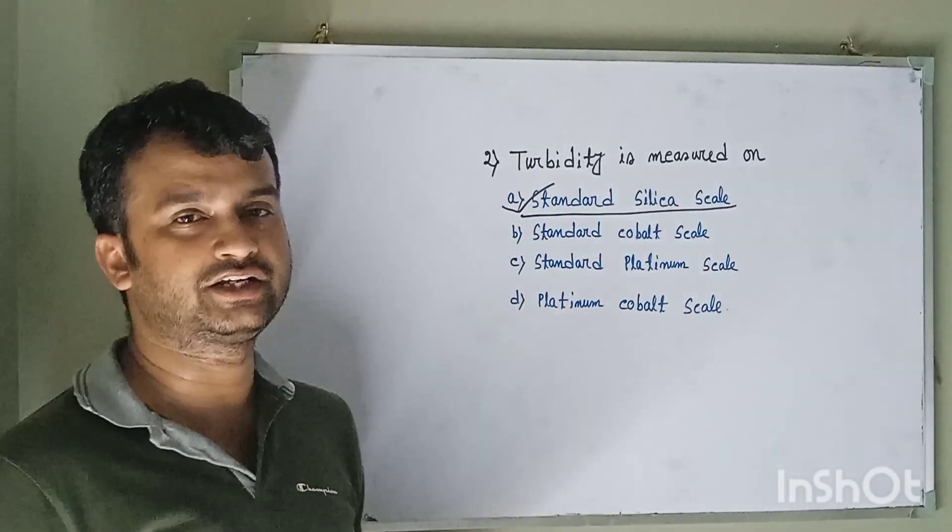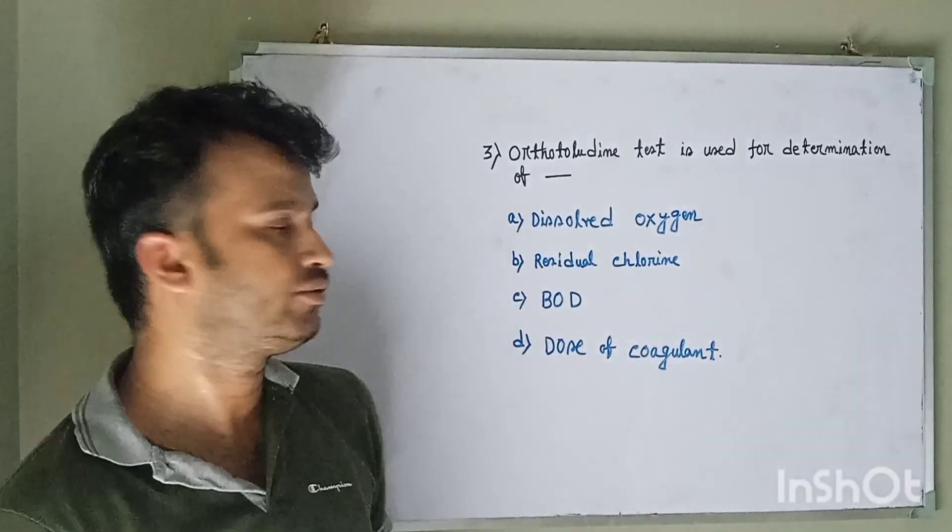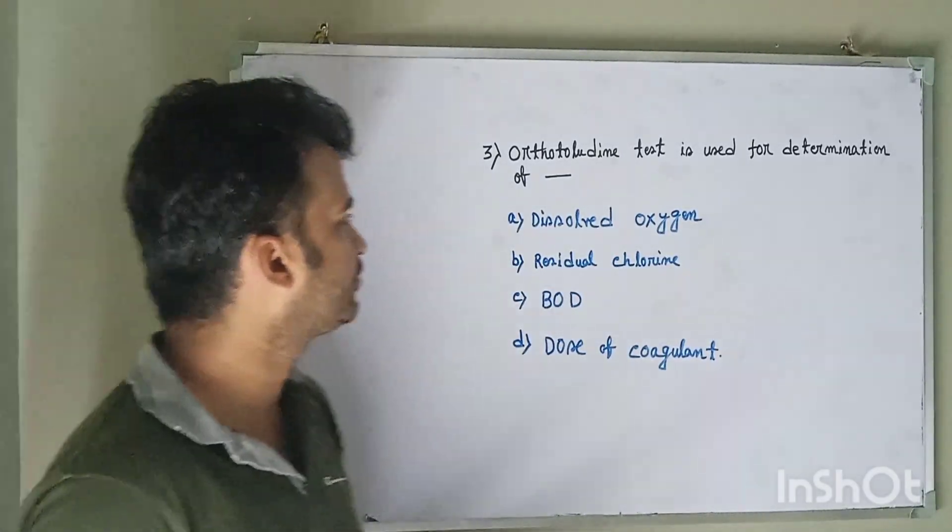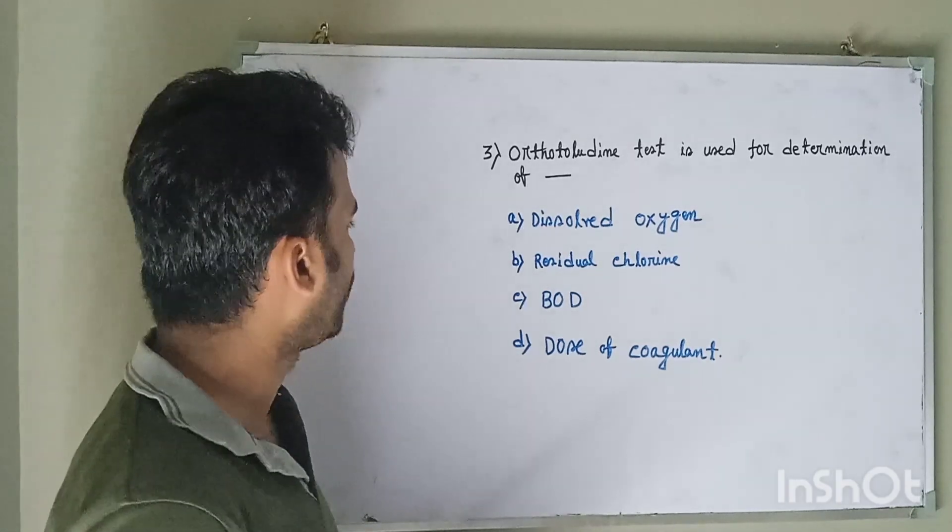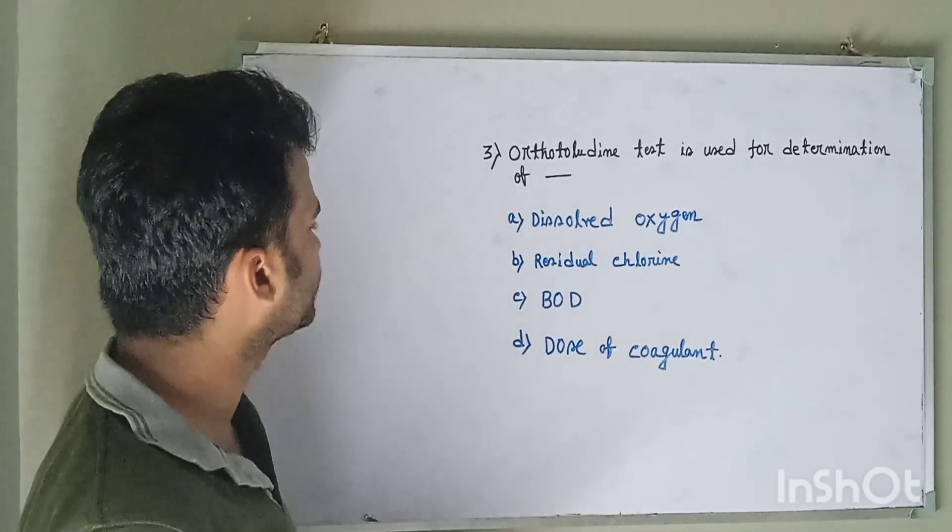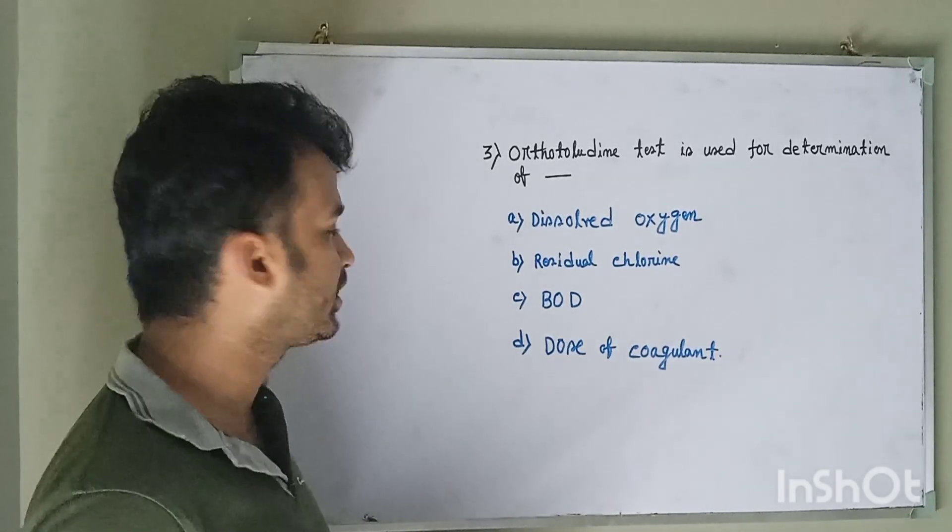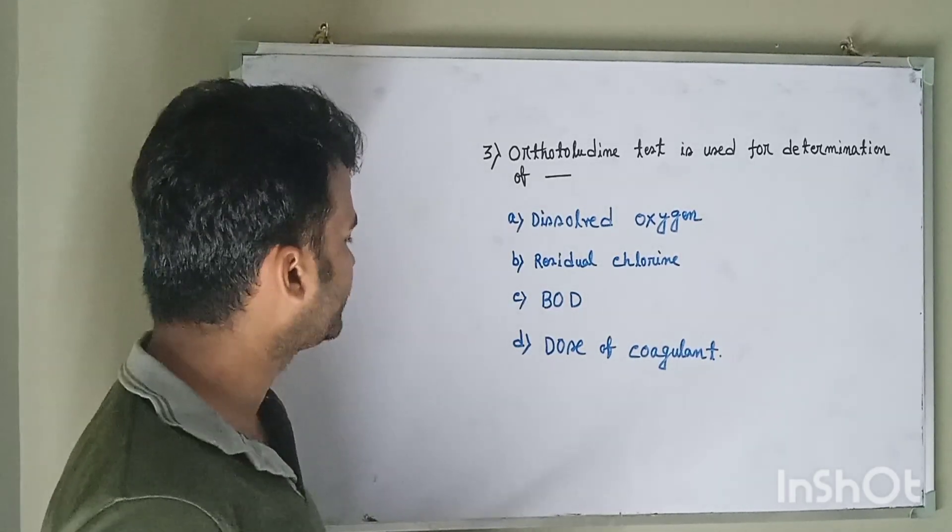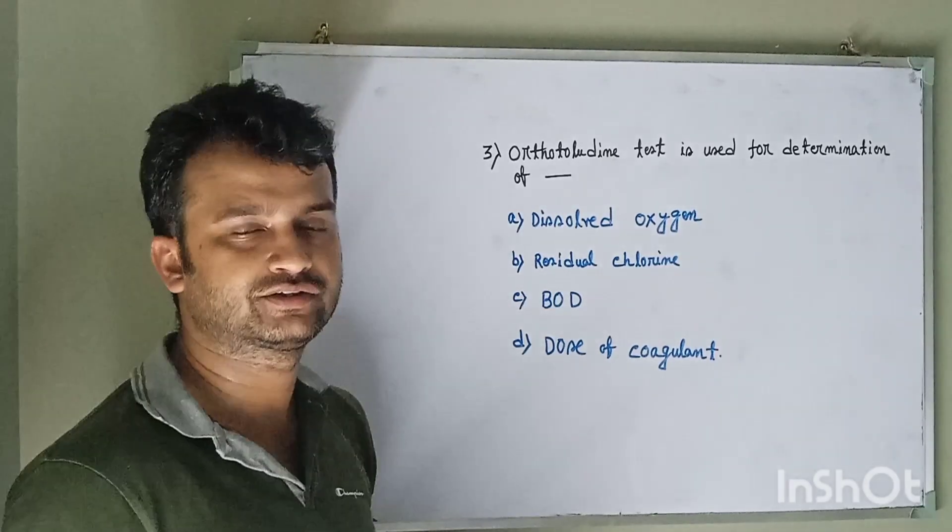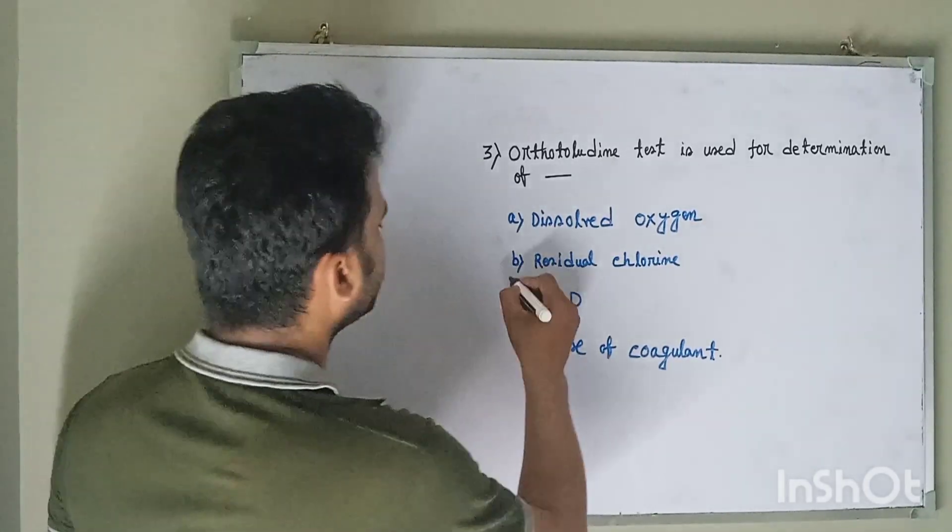Question number three: Orthotolerant test is used for determination of option A dissolved oxygen, option B residual chlorine, option C BOD or biochemical oxygen demand, option D dose of coagulant. The correct answer is option B, residual chlorine. Residual chlorine is determined by orthotolerant test.